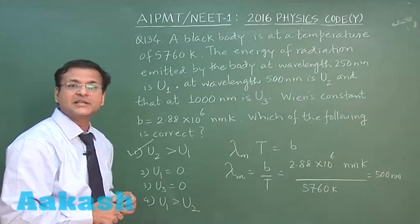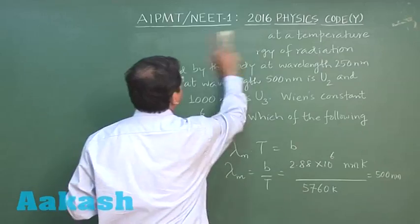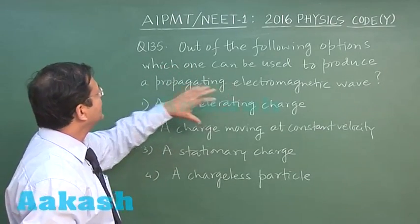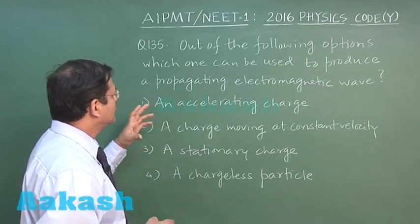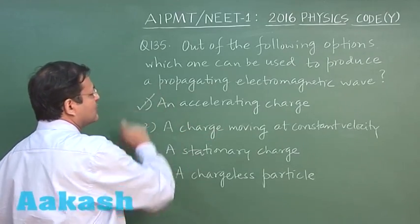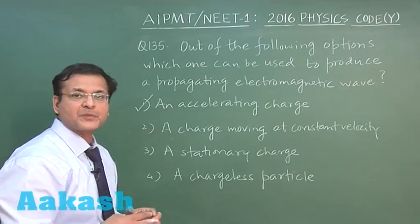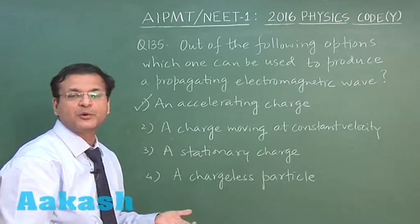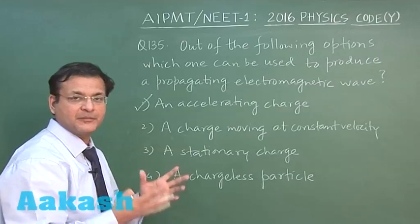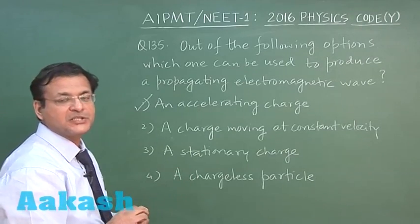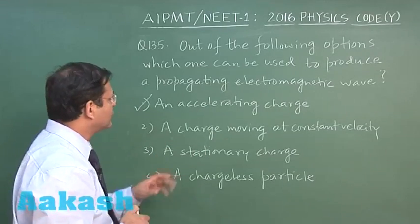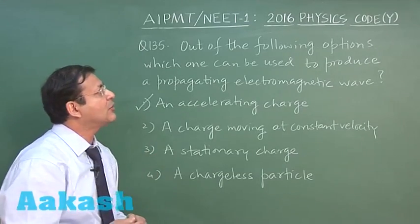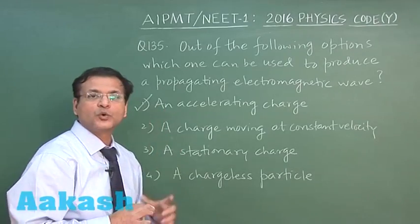Question 135 asks which option can produce a propagating electromagnetic wave. An accelerating charge produces EM waves. A charge moving with constant velocity produces electric and magnetic fields but not EM waves. A stationary charge produces only an electric field. Therefore, the correct answer is the accelerating charge. This concludes the physics part of the NEET 2016 solution.